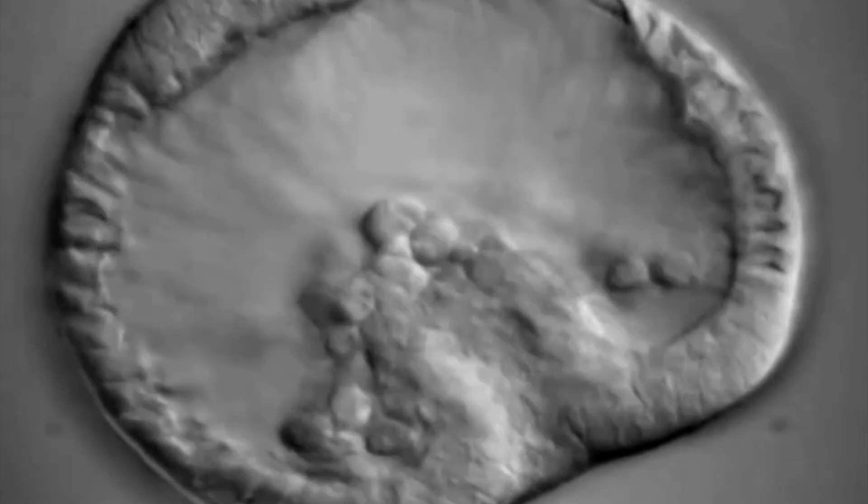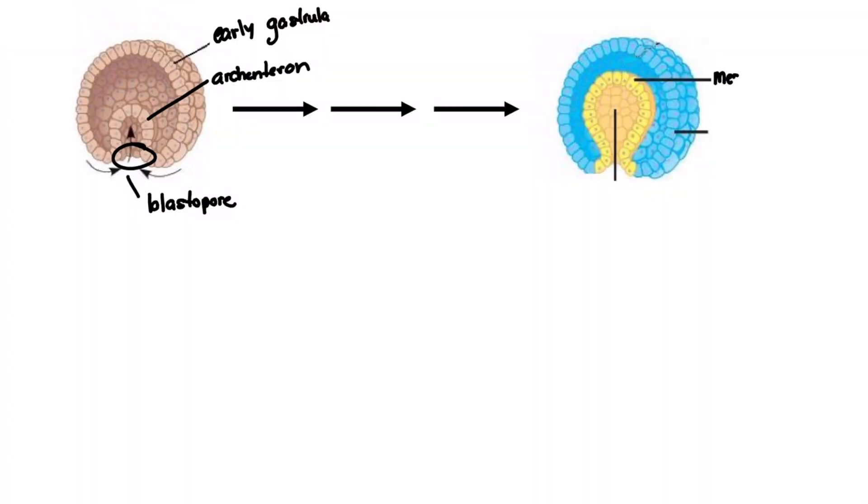As cells take up new positions, the archenteron will extend through the embryo to reach the surface at the other end, to complete formation of the primitive gut. The embryo is said to be a gastrula when it contains the three germ layers that will interact to generate the organs of the body.